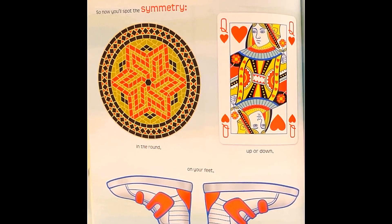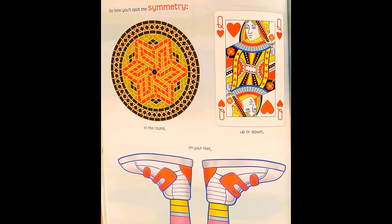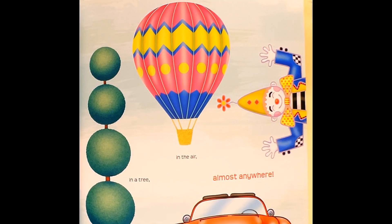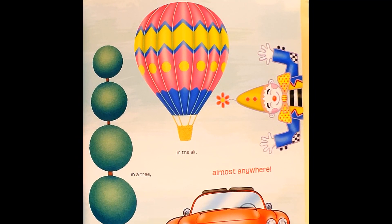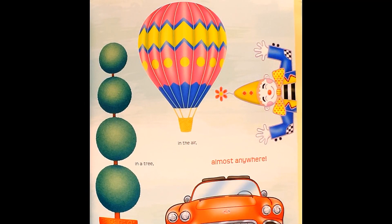So now you'll spot the symmetry. In the round, up or down, on your feet, in the air, in a tree, almost anywhere. What is a topiary? See page 29.